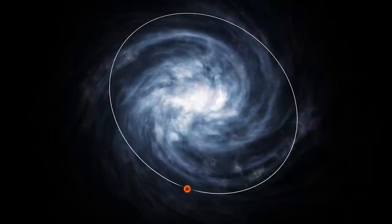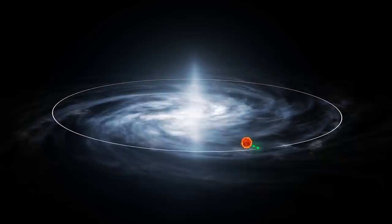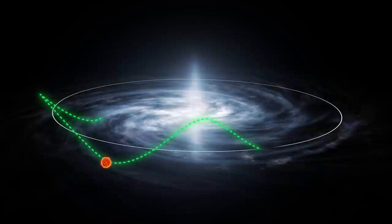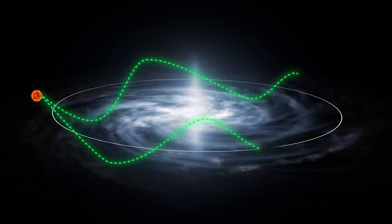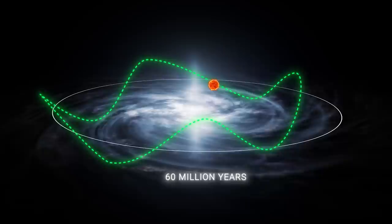The orbit of the Sun around the center of the galaxy is not perfectly circular either. Instead, it follows a slightly elliptical path oscillating above and below the galactic plane. It completes a full oscillation approximately once every 60 million years.